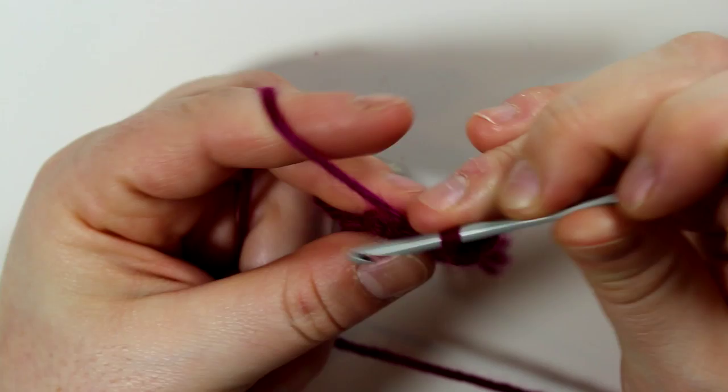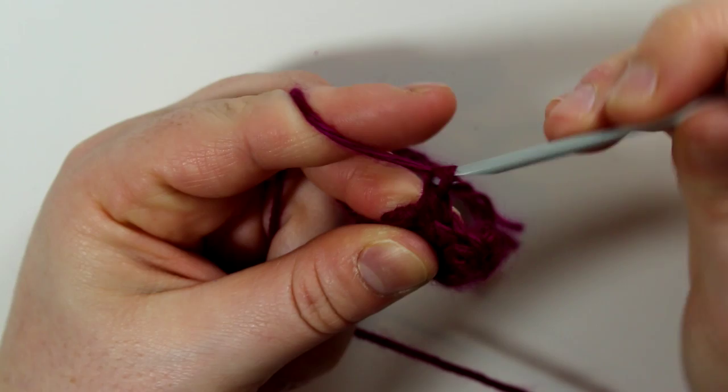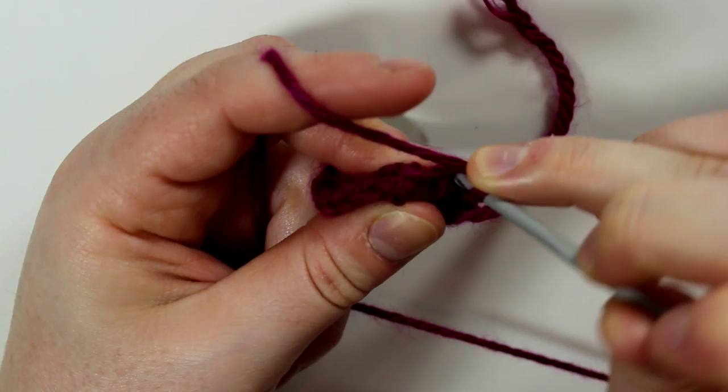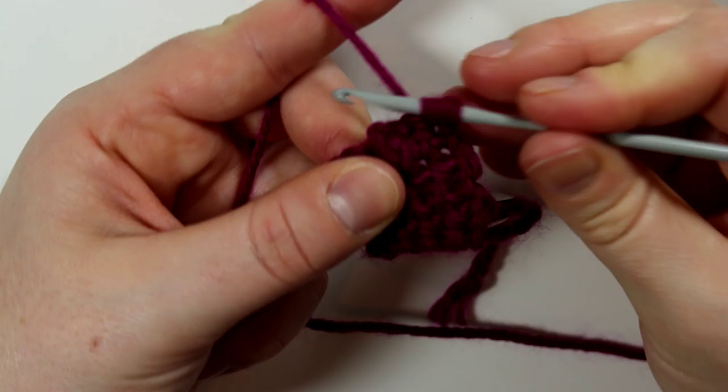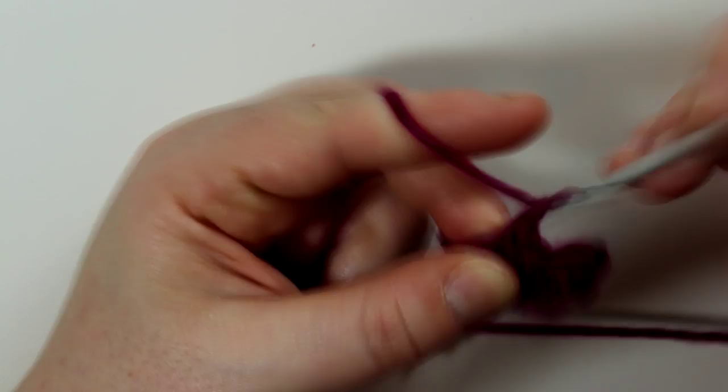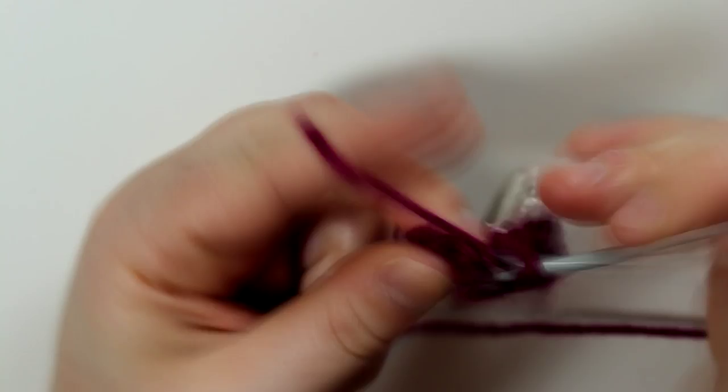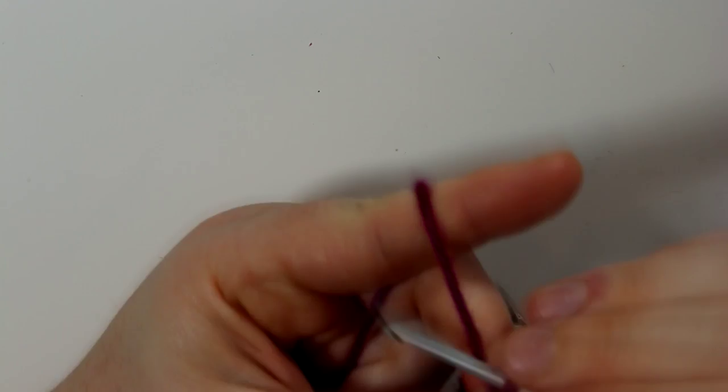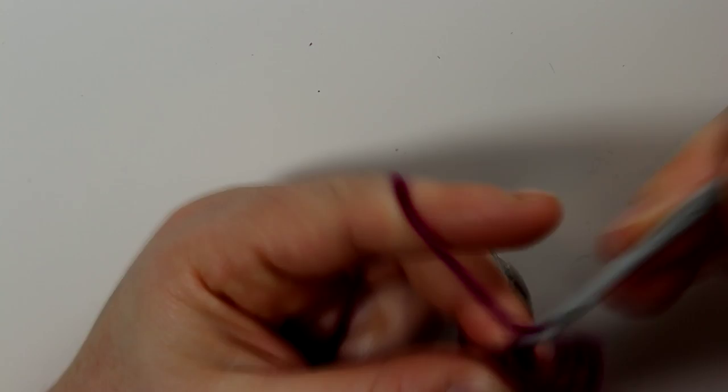I just went ahead and I sped this part up and I did another three rows of five single crochets, chaining one in the beginning. Then I will go on to do another decorative row, and you always want to make sure that when you do your decorative row that you're doing it on the same side as the previous decorative row.